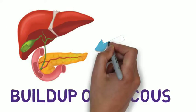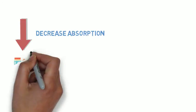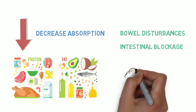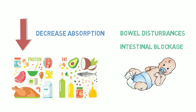Mucus buildup in the pancreas can also lead to decreased absorption of fats and proteins, which can cause bowel disturbances and intestinal blockage, especially in infants.